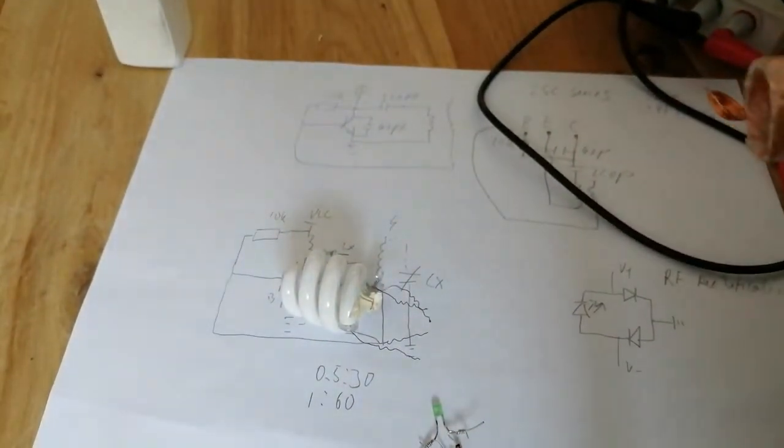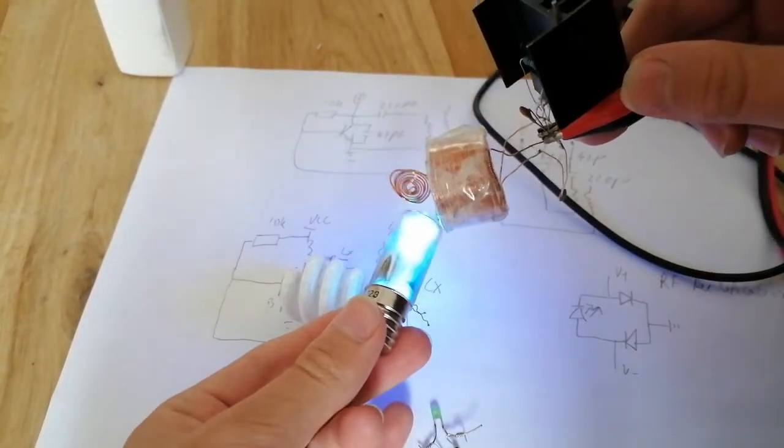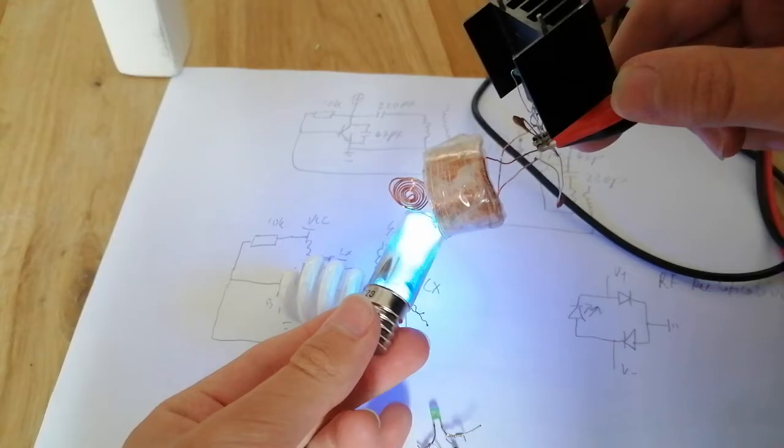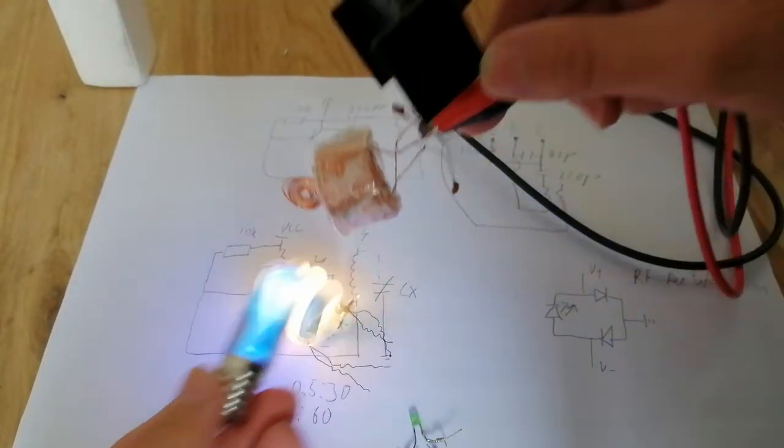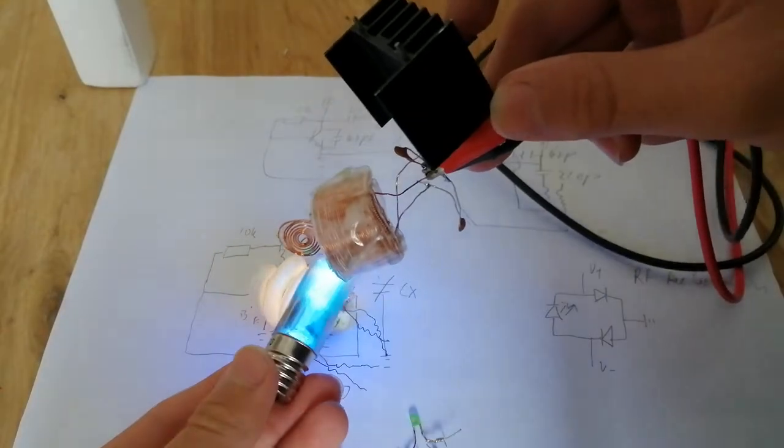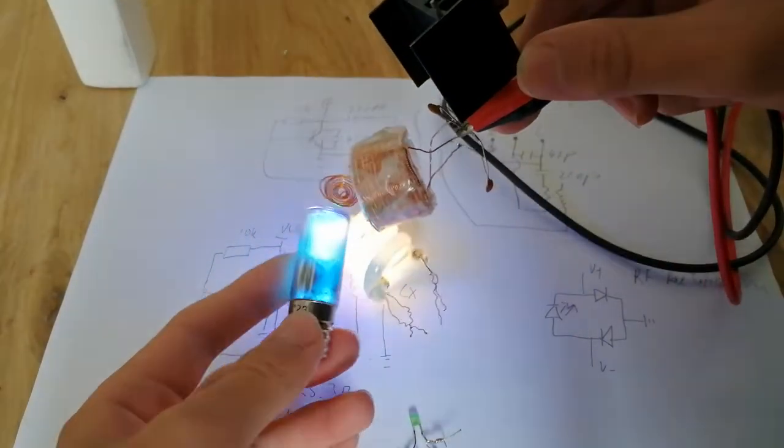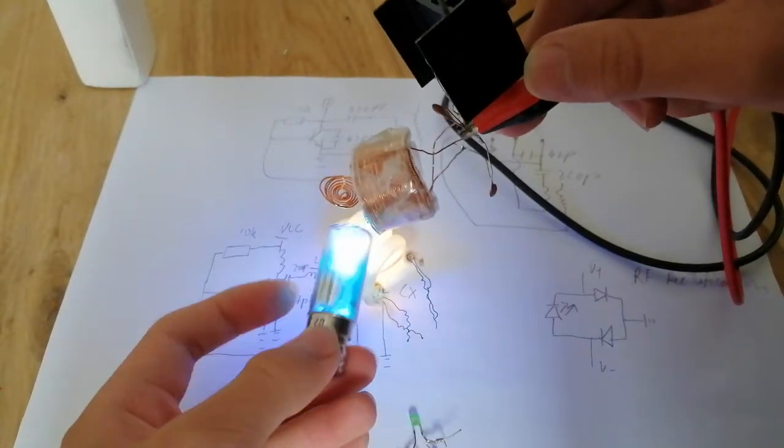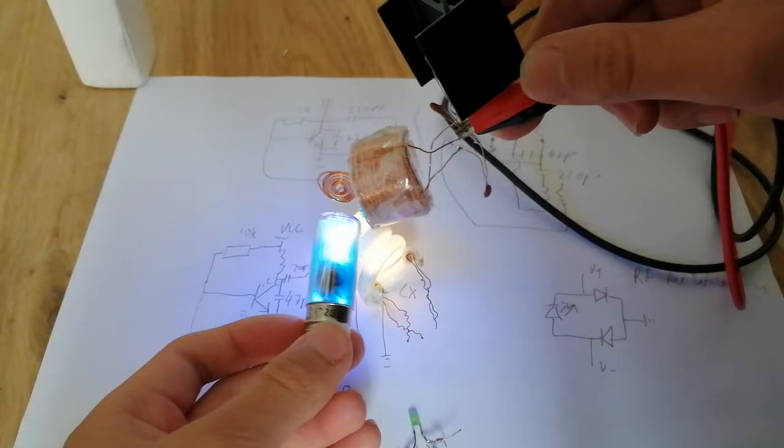But something interesting happens if we bring a mercury vapor bulb. Look, this one is much brighter than this one shown in the camera. But in reality those two is about the same brightness. But if this has phosphor coating, this one will be much brighter since it makes a better cavity for the RF to ignite.